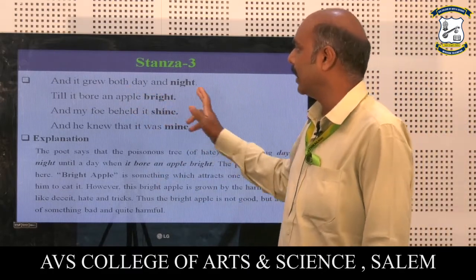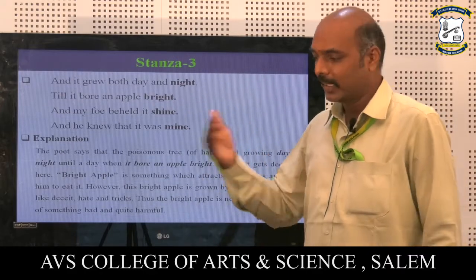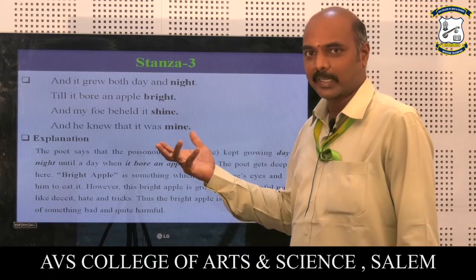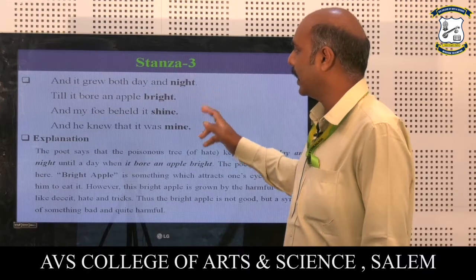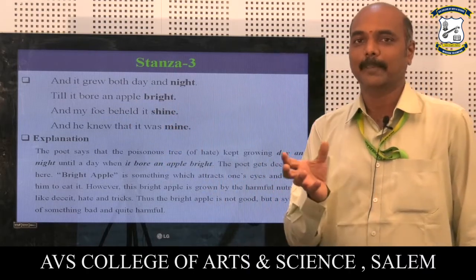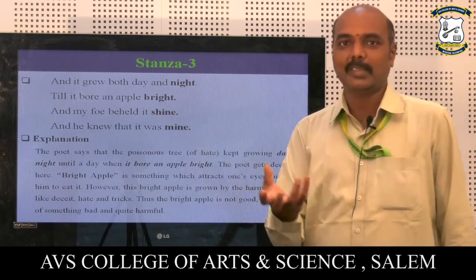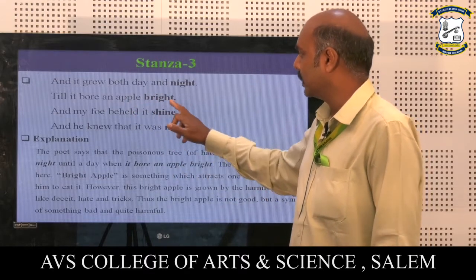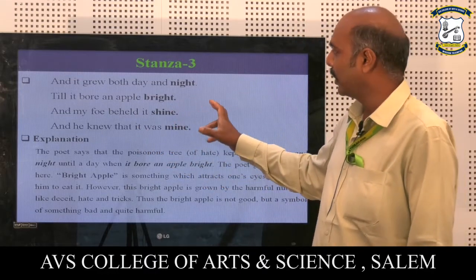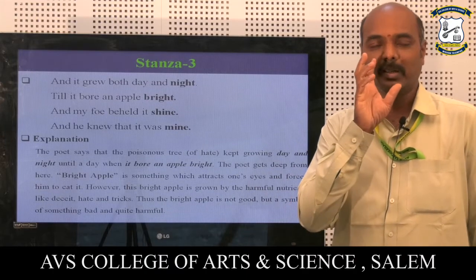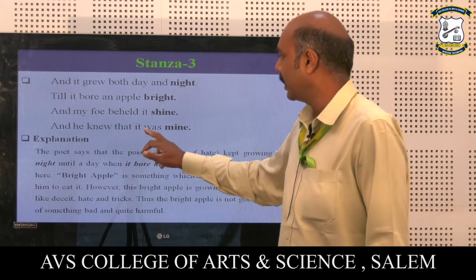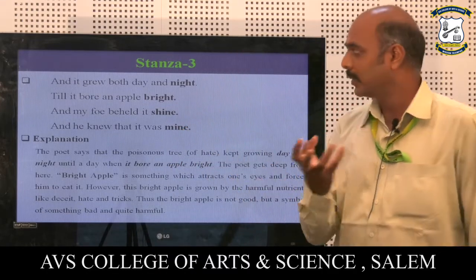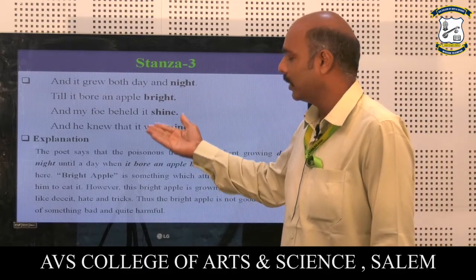In stanza three, the anger grew both day and night, multiplying continuously. The amount of anger cannot be measured — it is abstract — but it keeps on multiplying day and night. The poem says it 'bore an apple bright.' Now the anger is compared to a tree bearing fruit, and that fruit is an apple. The fruit of anger is compared to a bright apple, and the foe, the enemy, was attracted by its color and shine. And the foe knew that it was the speaker's.